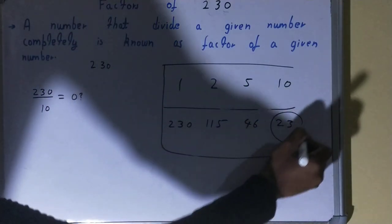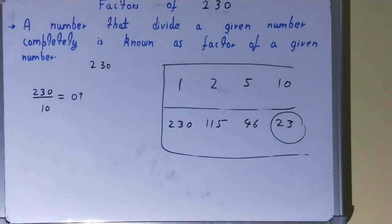in the last row, you have got a prime number in the form of 23. So whenever you spot a prime number in the second row, in the last row, your work is done then and there only. You don't need to check any further.